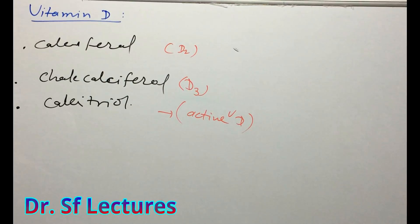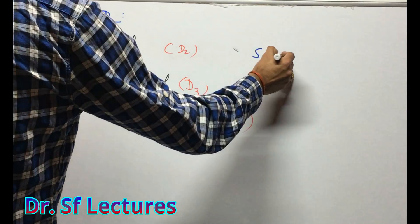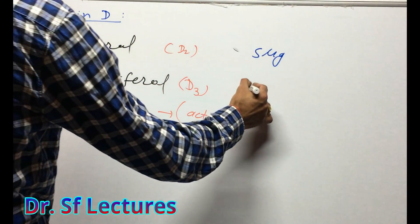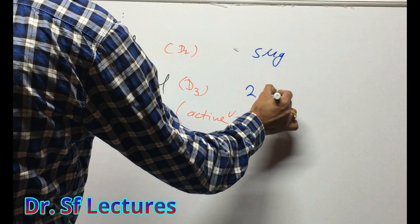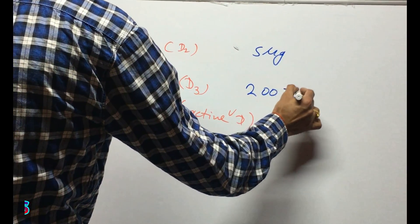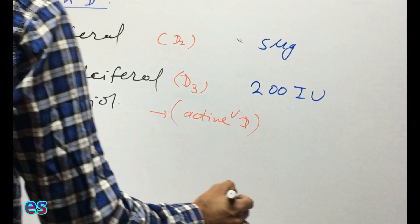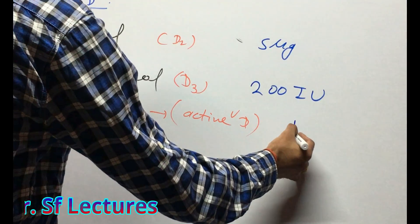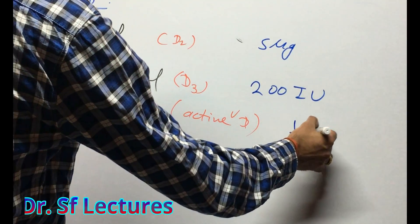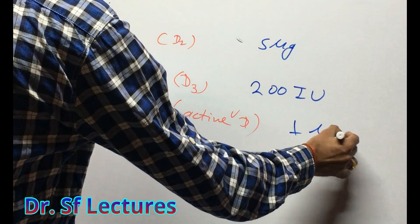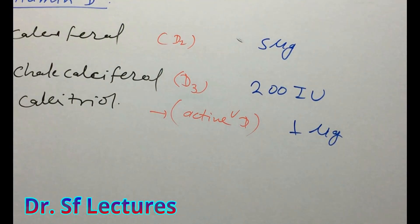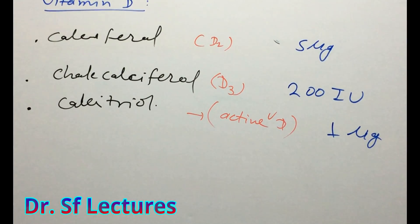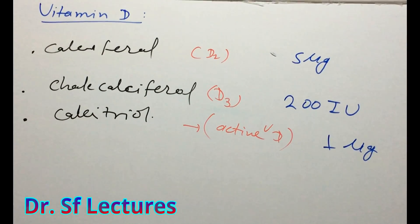Listen carefully. The dose of calciferol is 5 micrograms. The dose of D3 (cholecalciferol) is 200 international units. The dose of calcitriol is very very less — 1 microgram. So these are the generic names and doses of Vitamin D.